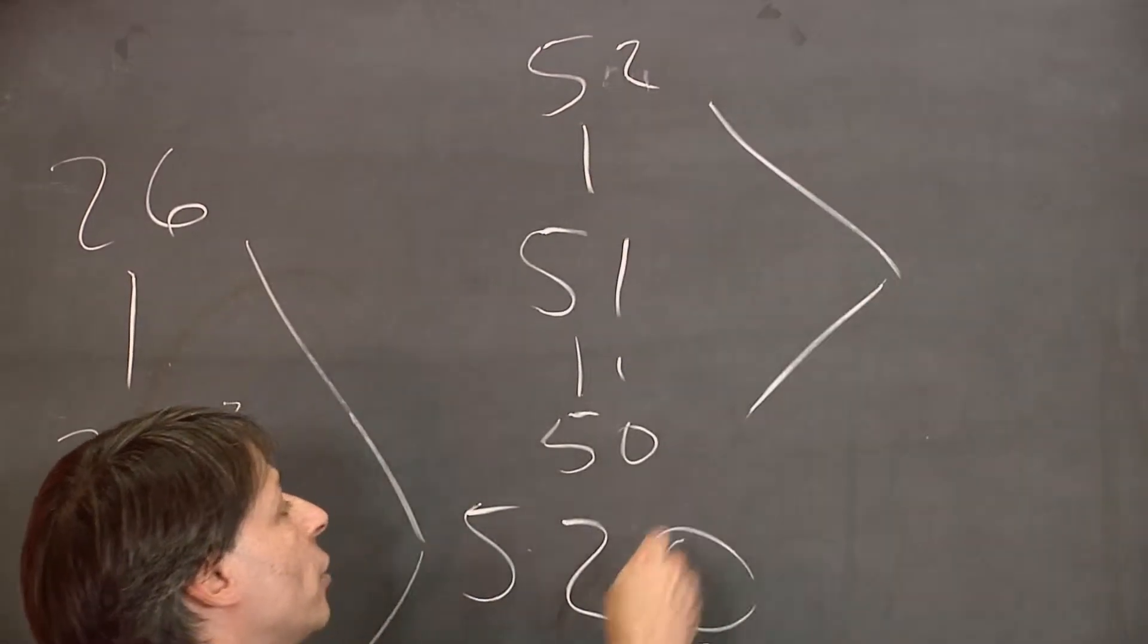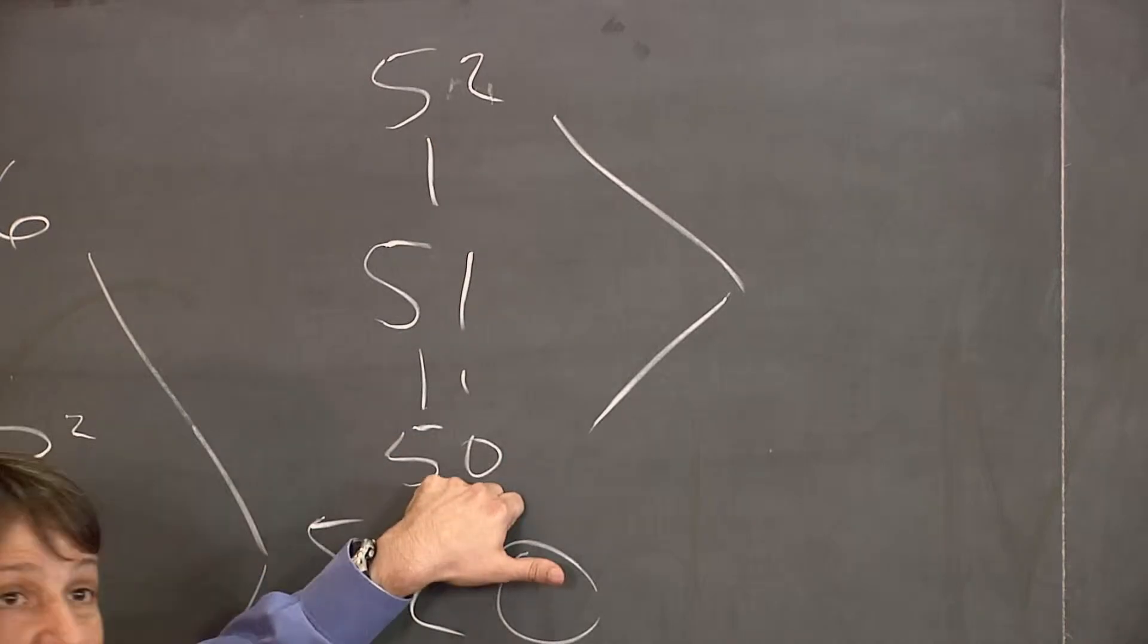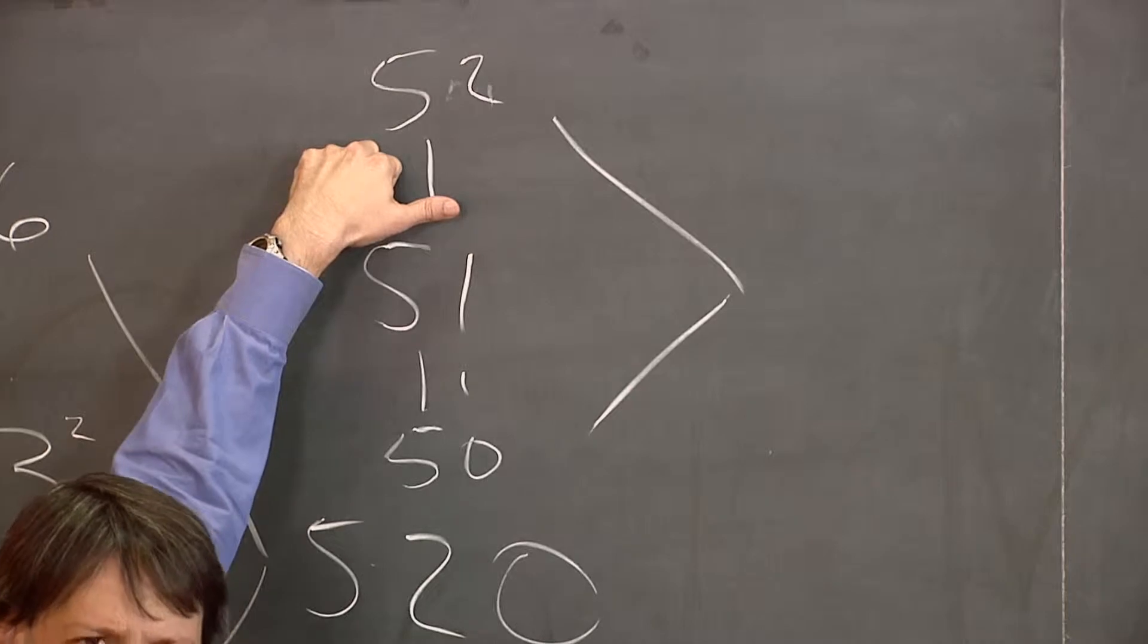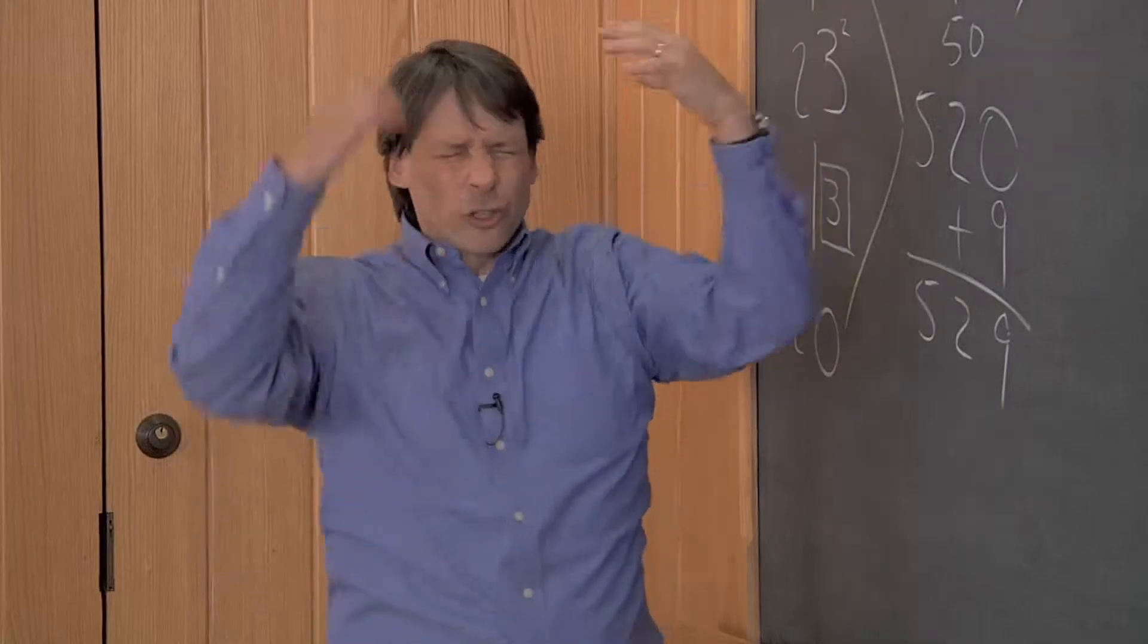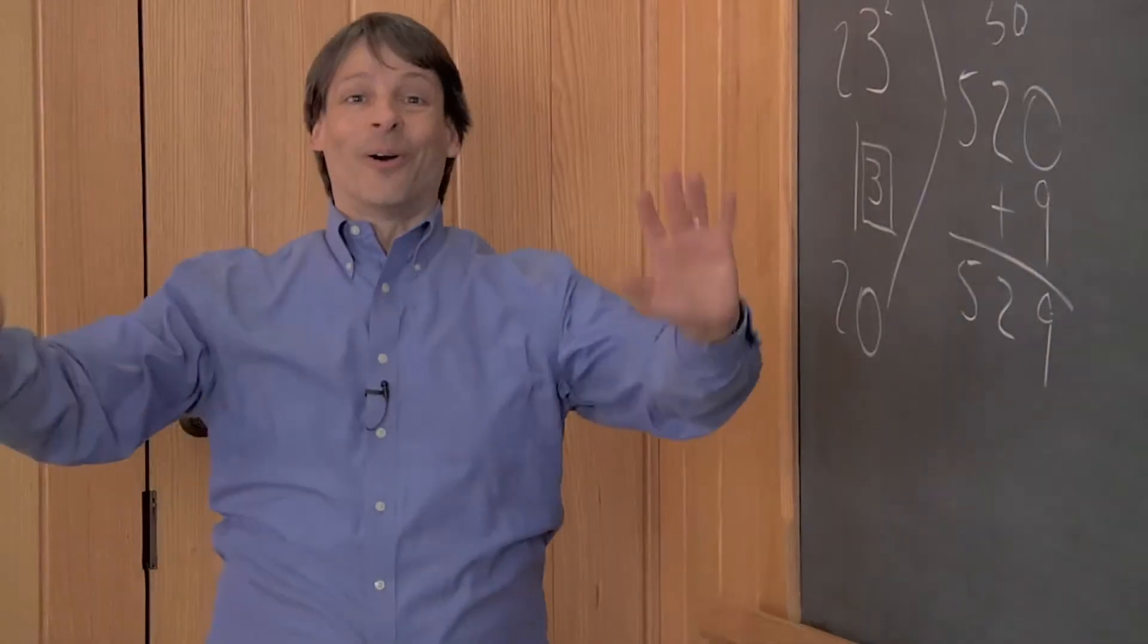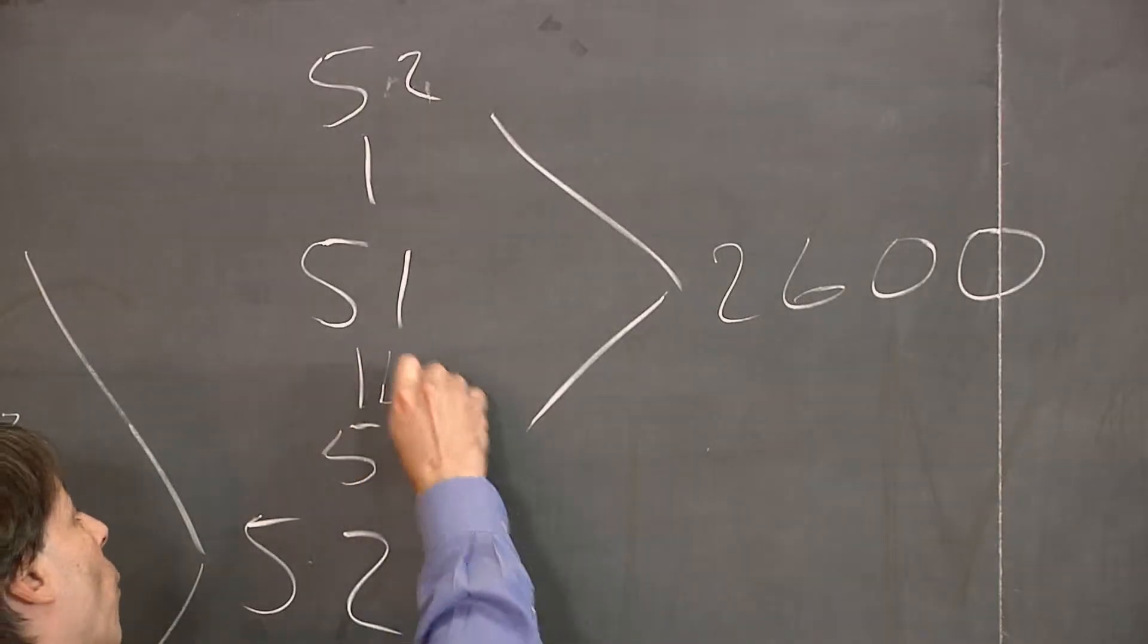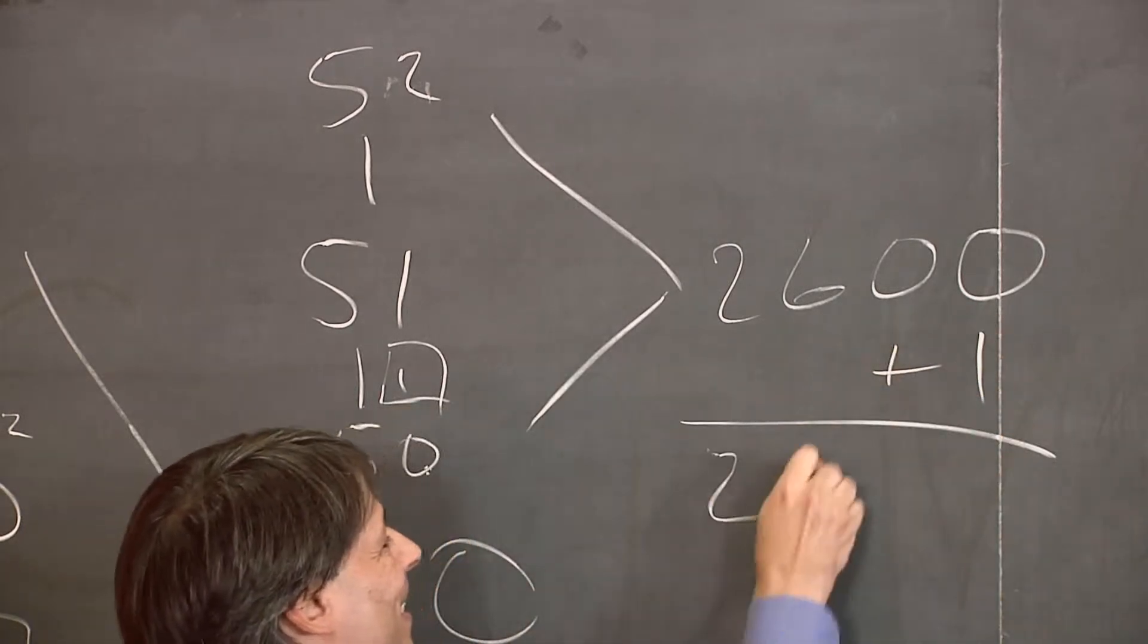Now let's do 52 times 50. There are two ways we can do this problem. One is we do 5 times 52 and attach a zero. Let me show you that way first. So 5 times 50 is 250. 5 times 2 is 10. 250 plus 10 is 260. Attach the friendly zero to get 2,600. Almost done. All we have to add to that is the square of 1, which is 1, giving us 2,601.